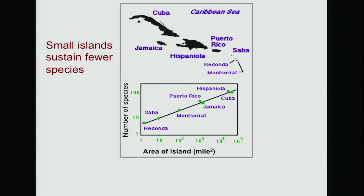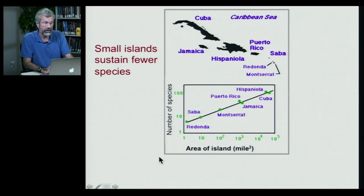We view these habitat fragments as if they're islands. There's a whole field called island biogeography that looks at how many species exist and what happens to species on islands of different sizes. There's a very recurrent pattern: the smaller the island, the fewer the species. This is well illustrated from the study of plants in the Caribbean, where they calculated the size of each island — the largest being Cuba and Jamaica, and the smallest being Redonda and Saba.